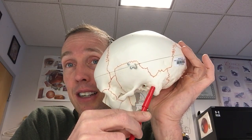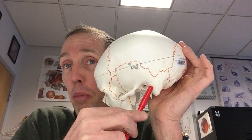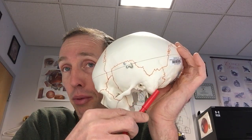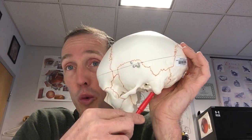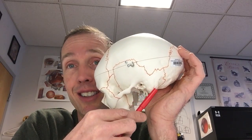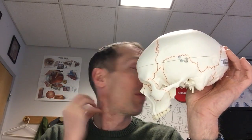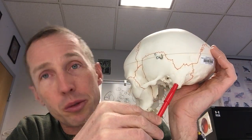Near the ear canal, we have a big bulge — this is the mastoid process. Ask your teacher why it's called the mastoid process; it's an interesting story. You can feel your own mastoid process just behind your ear. Your sternocleidomastoid, the muscle that turns your head, pulls on your mastoid process.